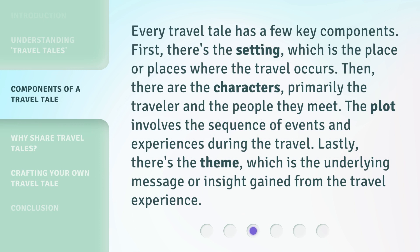Every travel tale has a few key components. First, there's the setting, which is the place or places where the travel occurs. Then there are the characters, primarily the traveler and the people they meet. The plot involves the sequence of events and experiences during the travel. Lastly, there's the theme, which is the underlying message or insight gained from the travel experience.